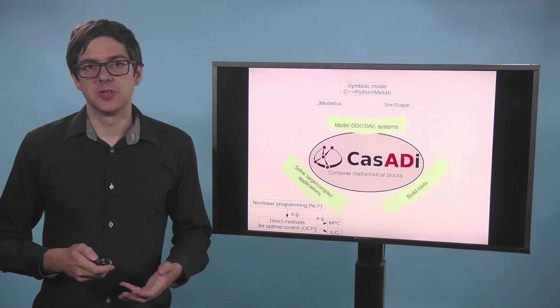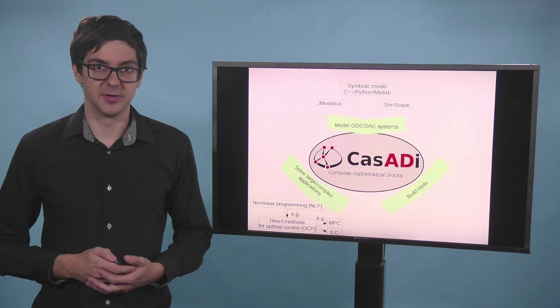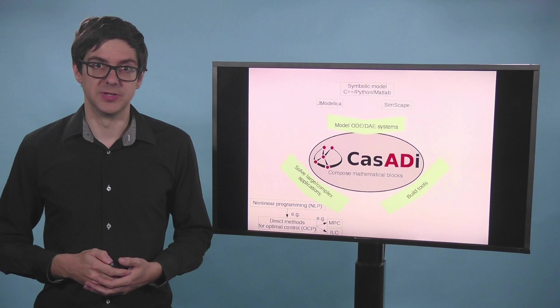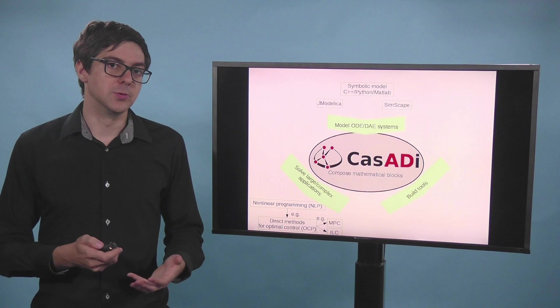Types of problems we can solve or people use CASADI to solve is nonlinear programming in general. And then in particular direct methods for optimal control. So they give rise to large NLP problems. What can you do with optimal control? You could do MPC, model predictive control. Or you can do iterative learning control, ILC.